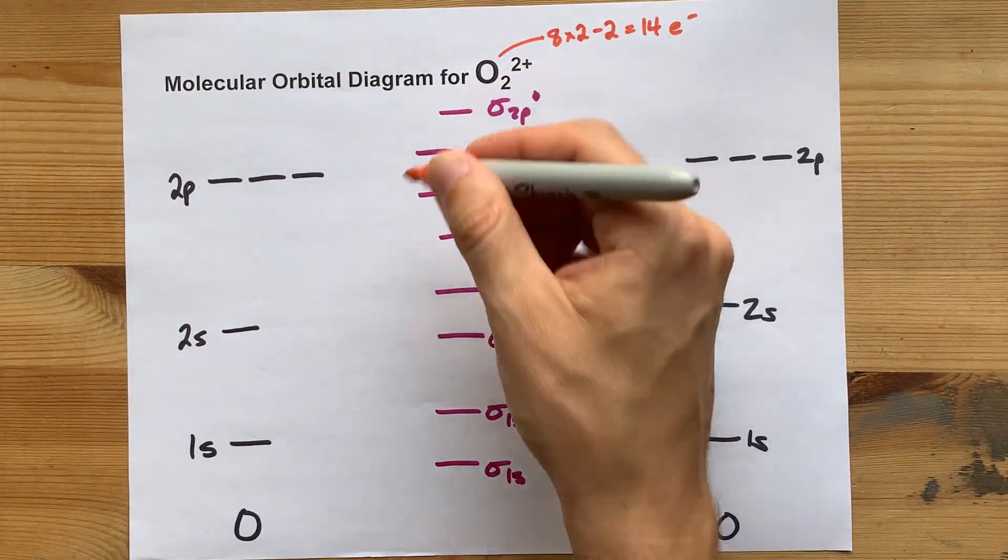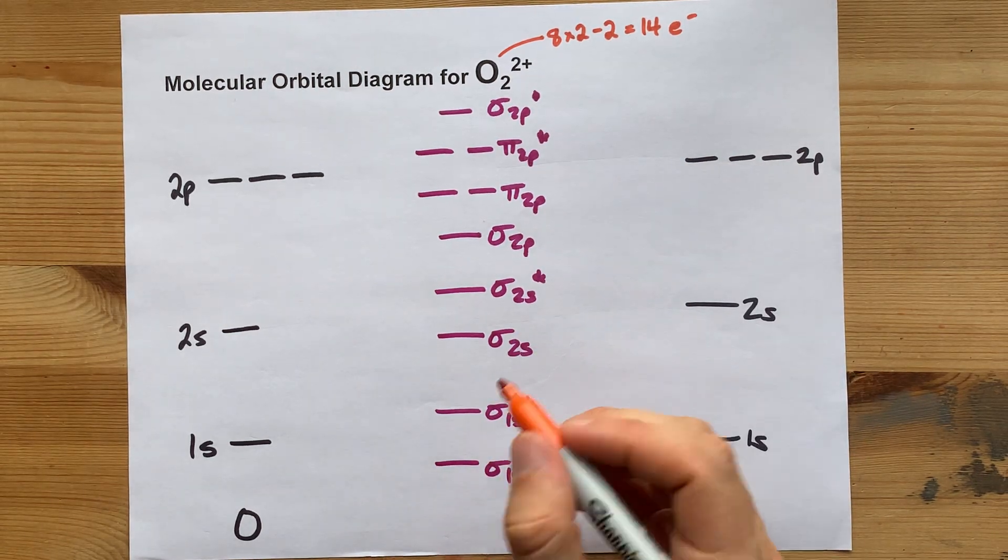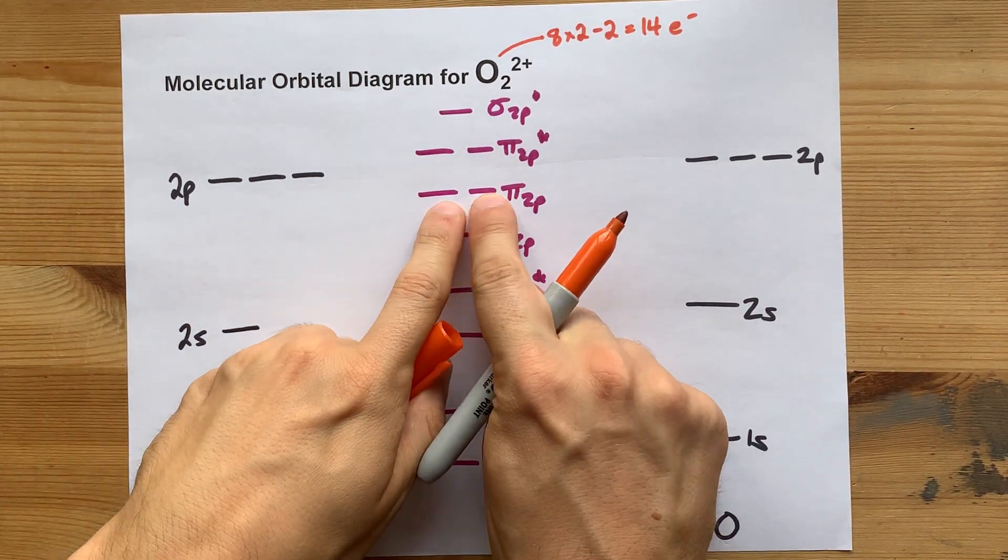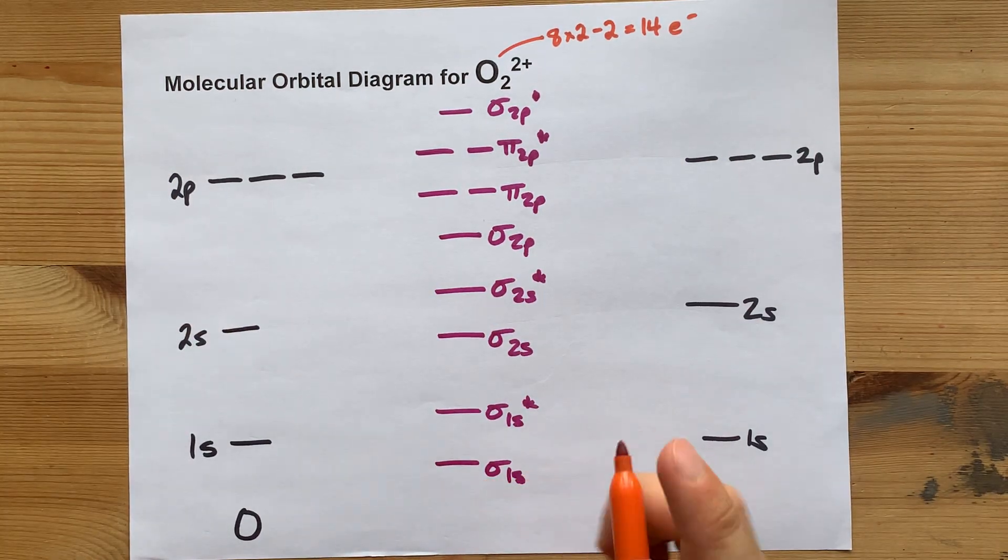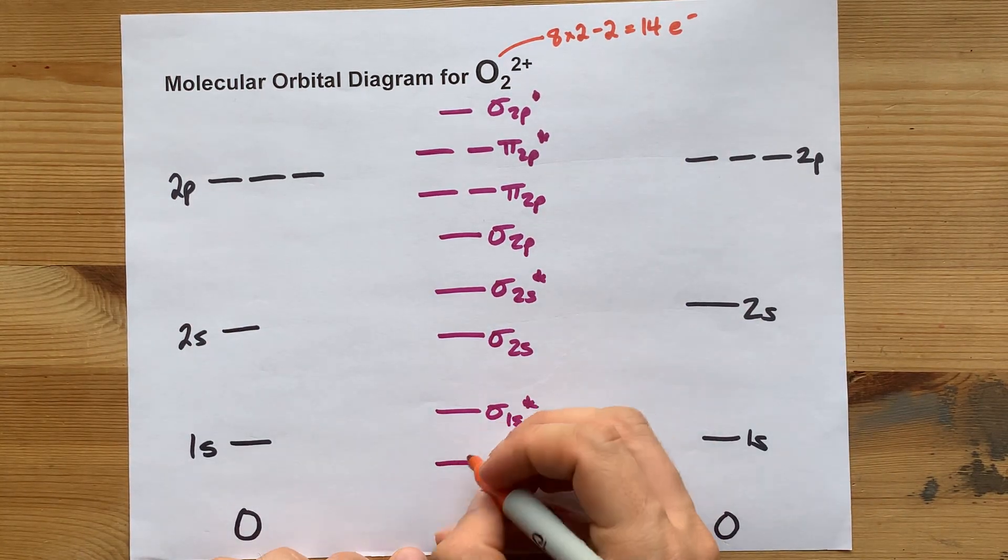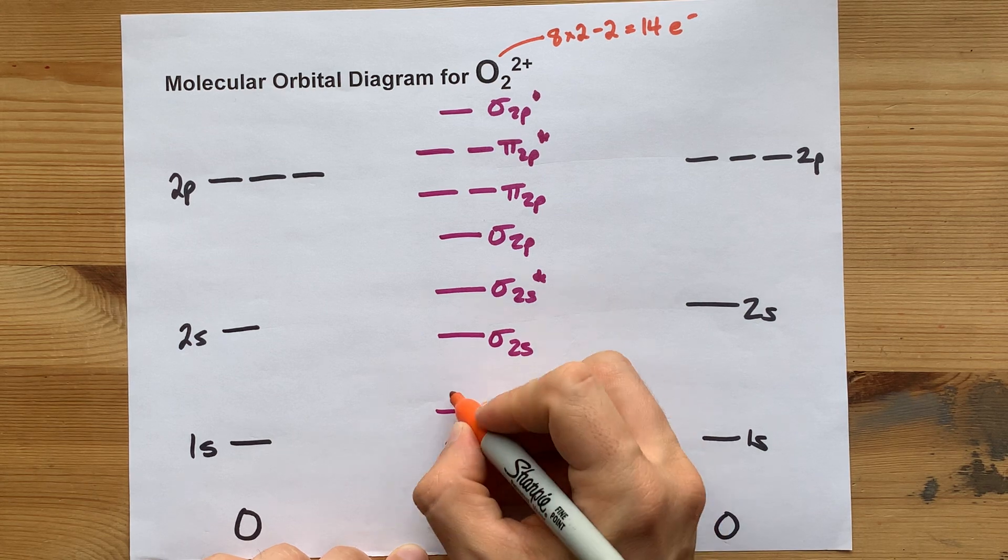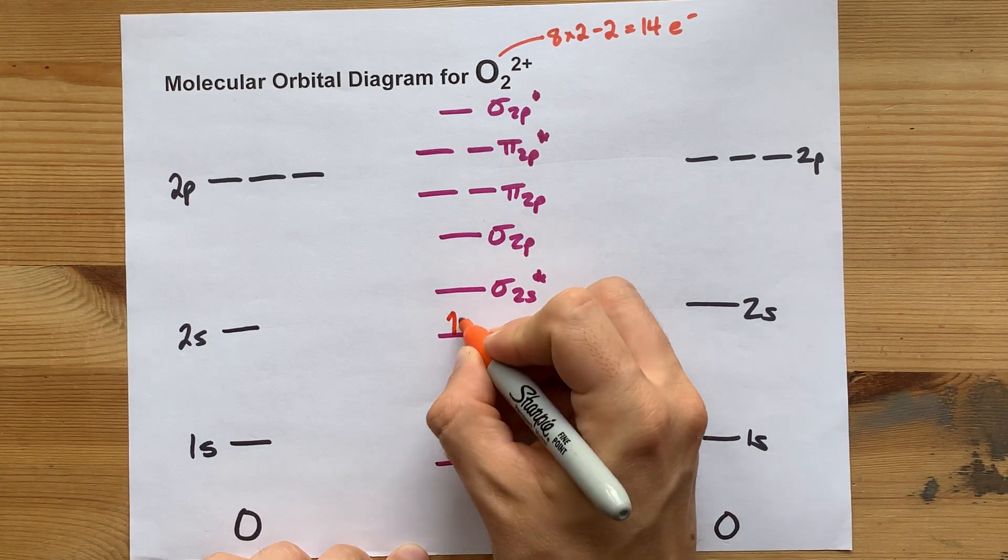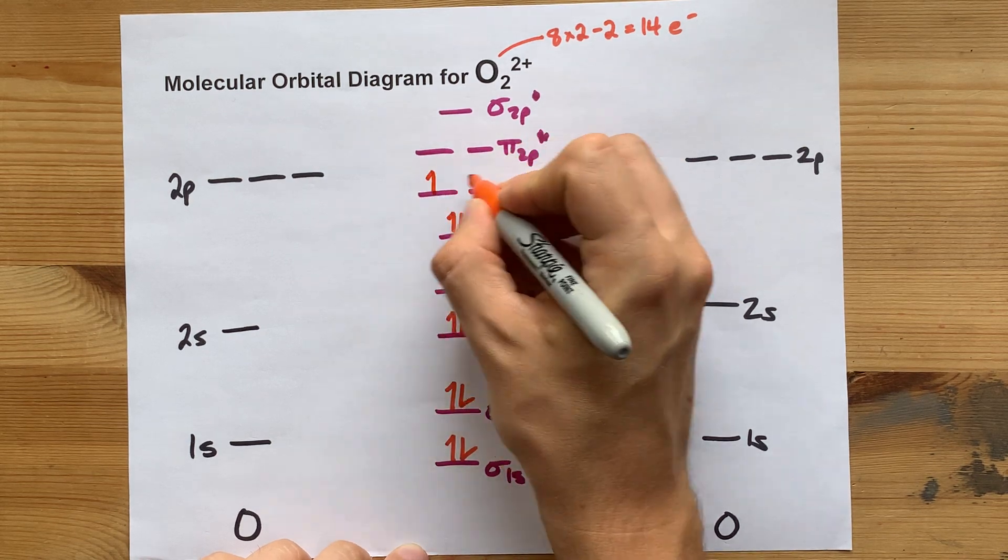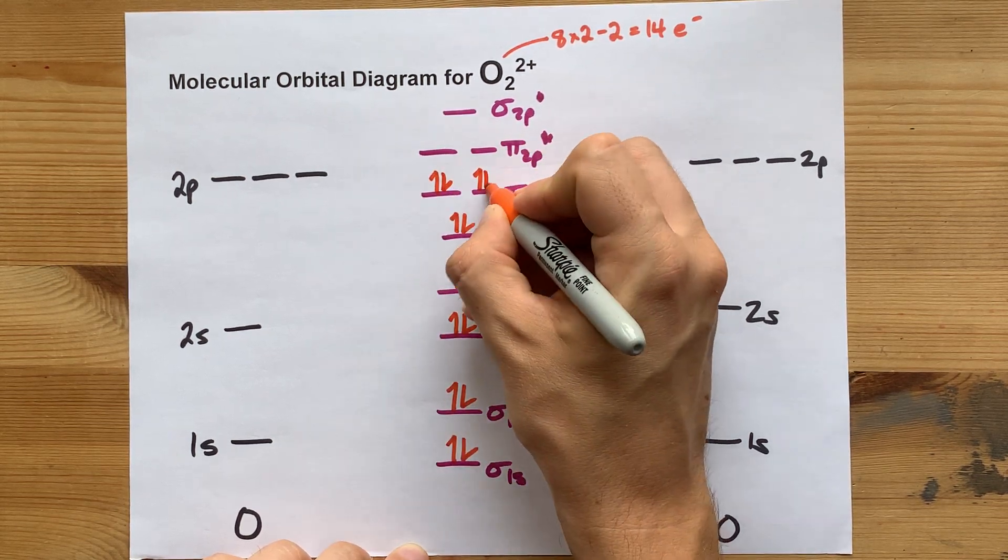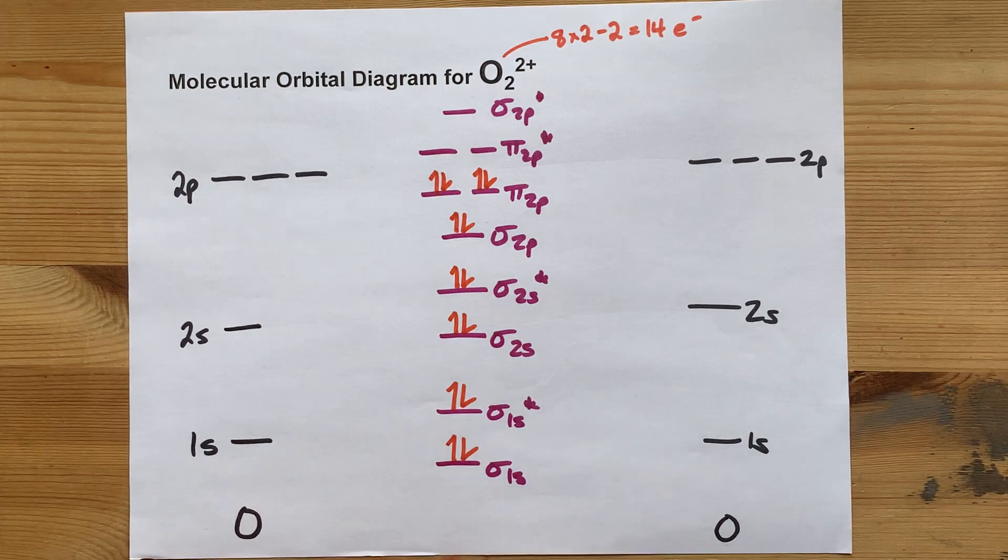Fill them from the bottom up, Aufbau principle, and if I get up to this height, I have to spread them out before I double them up. That's another quantum mechanical rule called Hund's Rule. Let's just do this. Counting 1 through 14, there's my 14 electrons.